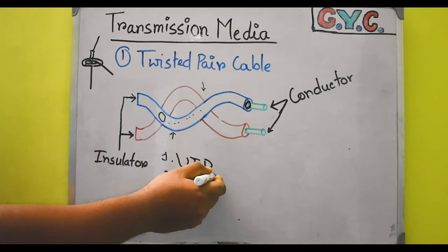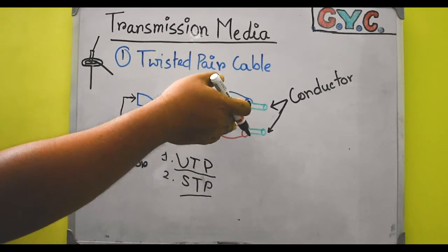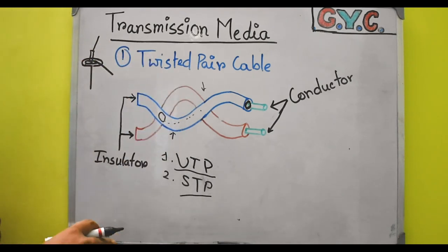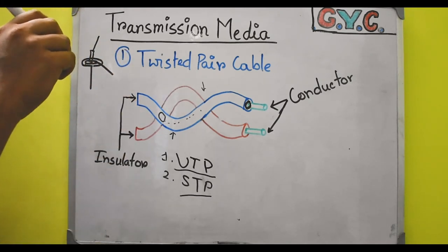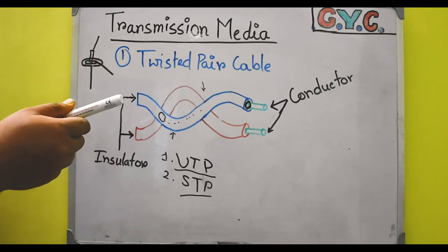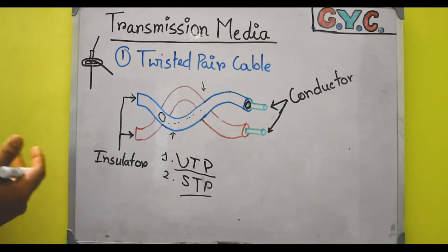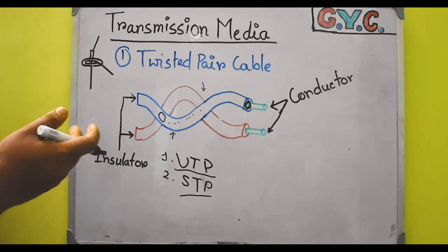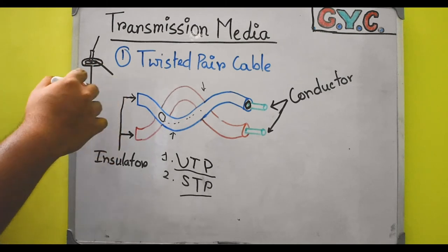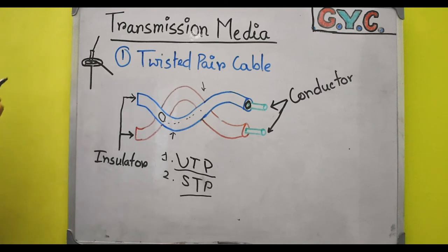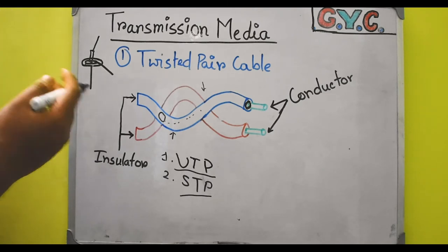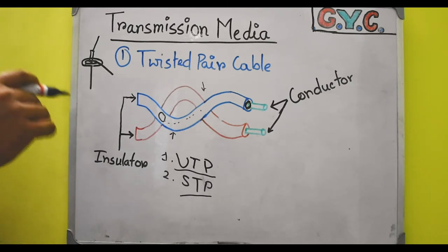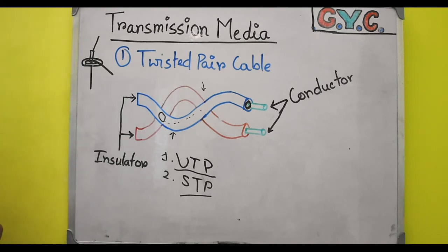This metallic shield helps us to cancel external noises in a better manner. In case of unshielded twisted pair, when there is no metal cover over the conductor, it may happen that the receiver receives some external noise or the message may be disrupted. But in the case of shielded twisted pair, the noise is cancelled so effectively that in about 90% of cases the receiver will receive the actual message that the sender wanted to send. This is how twisted pair cable works basically.